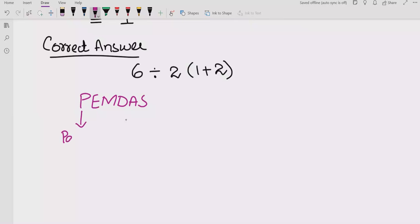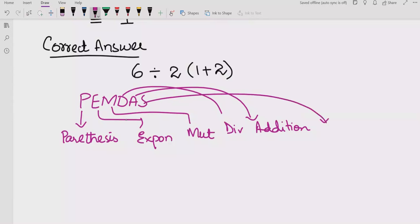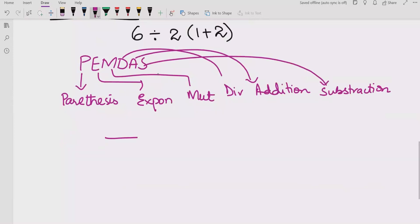So P for parenthesis, E for exponent, M for multiplication, and D for division, A for addition, and S for subtraction. One more thing: